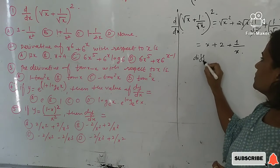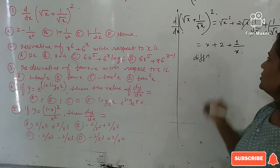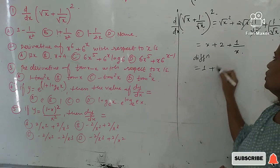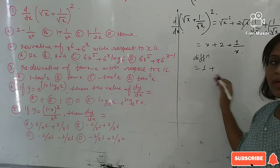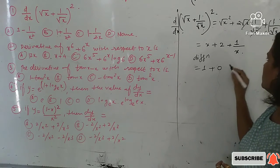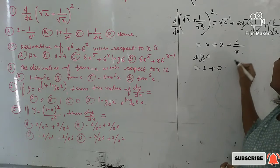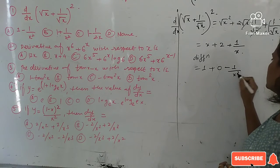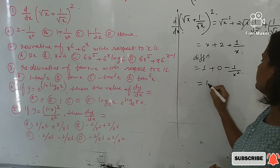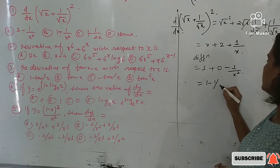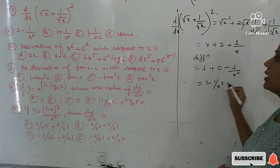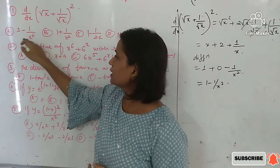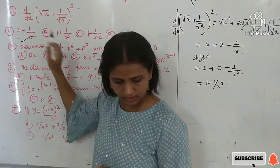Now differentiate. The derivative of x is 1, 2 is a constant so its derivative is 0, and the derivative of 1/x is −1/x². So the final derivative is 1 − 1/x². The correct option is (a): 1 − 1/x².